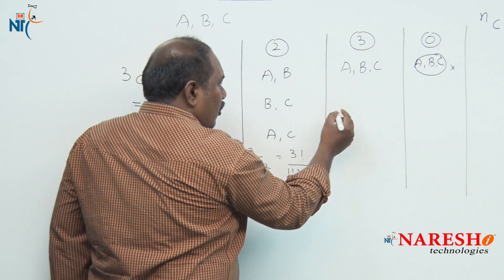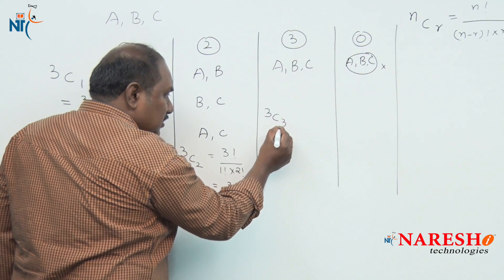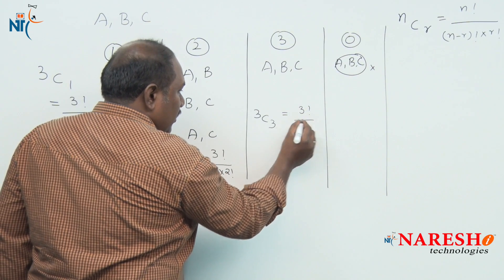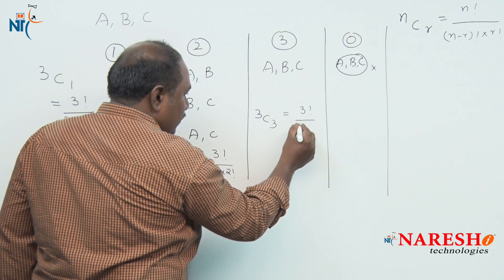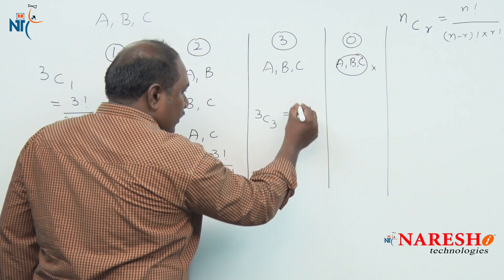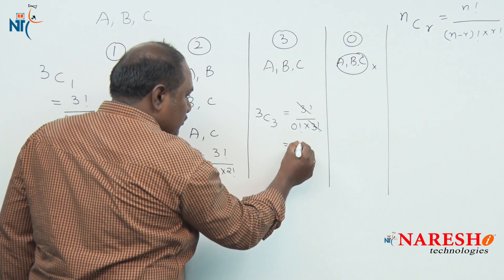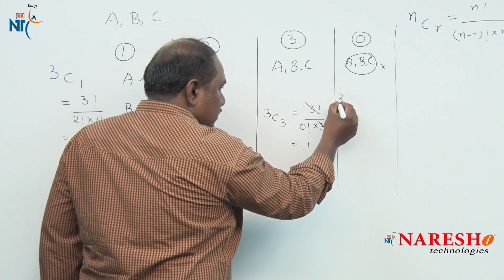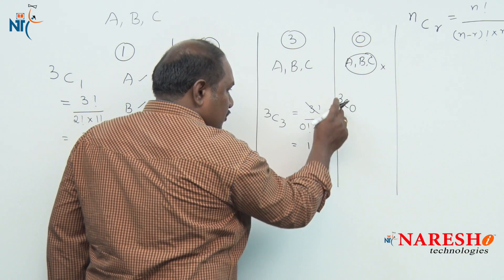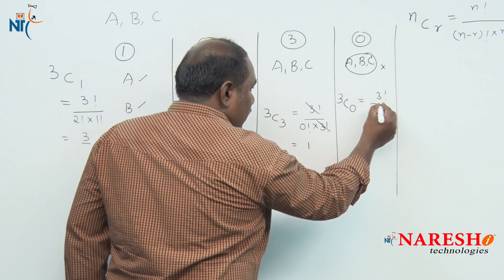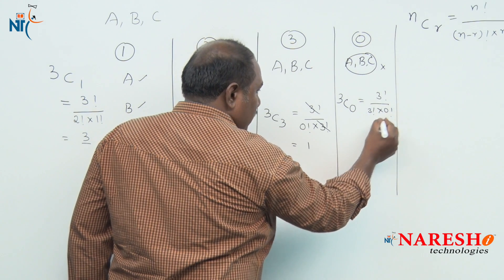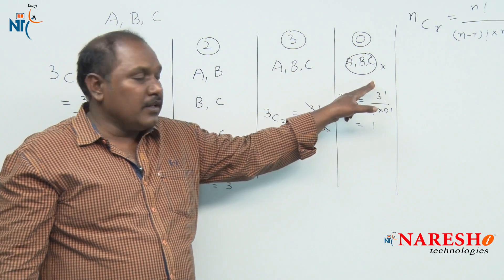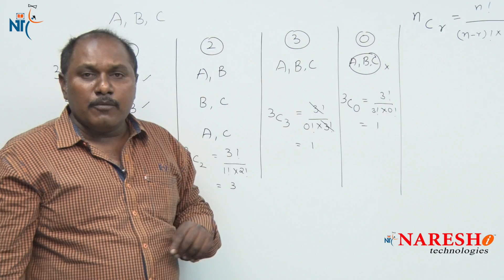Out of 3 friends we select all 3, done in 3C3 ways, which is 3 factorial divided by 0 factorial into 3 factorial. The two 3 factorials cancel and 0 factorial is 1, so the answer is 1 way. Out of 3 friends we do not select any one: 3C0 = 3 factorial divided by 3 factorial into 0 factorial, which is again 1. So not selecting anything is also 1 selection, and each of these selections is called a combination.